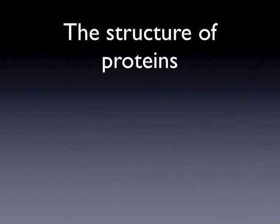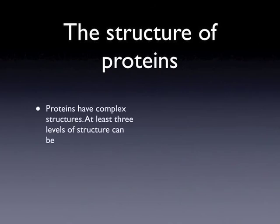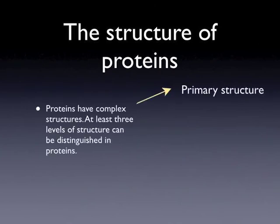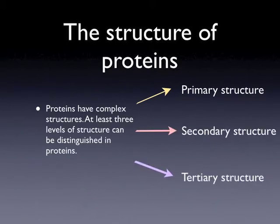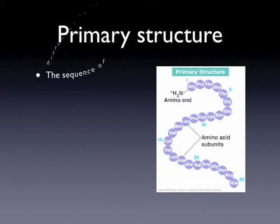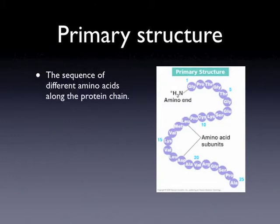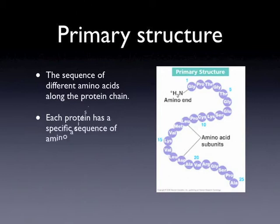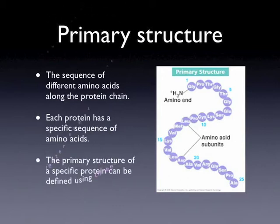Proteins have complex structures. At least three levels of structure can be distinguished in proteins: primary structure, secondary structure, and tertiary structure. The primary structure refers to the sequence of different amino acids along the protein chain. Each protein has a specific sequence of amino acids. The primary structure of a specific protein can be defined using the three-letter names of the amino acids.